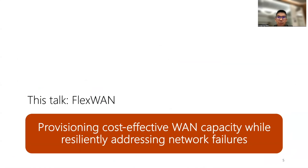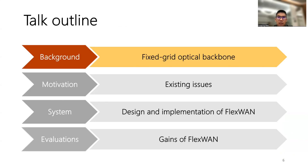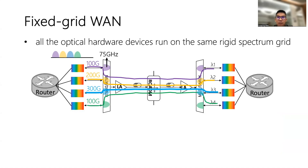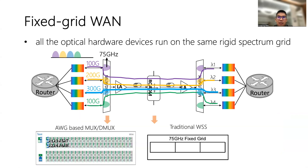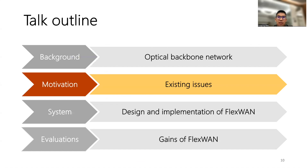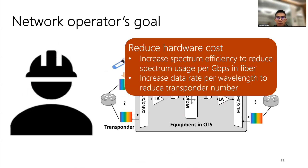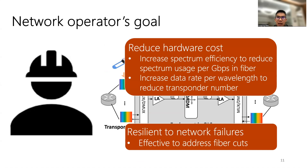In this talk, I will present a novel system to provision cost-effective WAN capacity while resiliently addressing network failures. The main goal for network operators is to reduce hardware cost, such as spectrum usage in fiber and transponder count. On the other hand, network failures are inevitable in the optical backbone, so the WAN should be resilient to network failures.